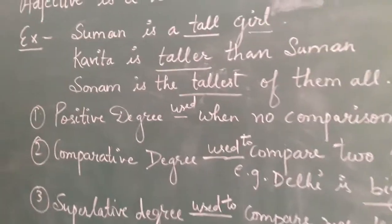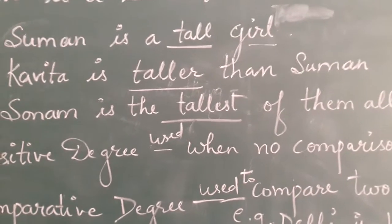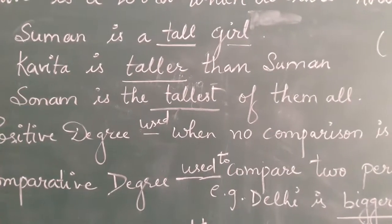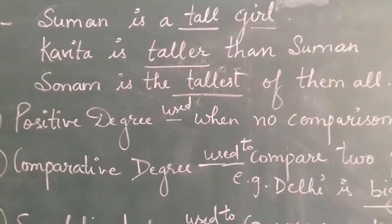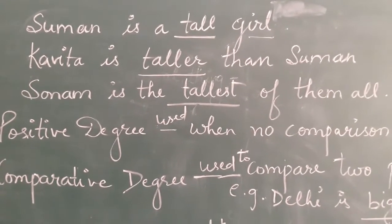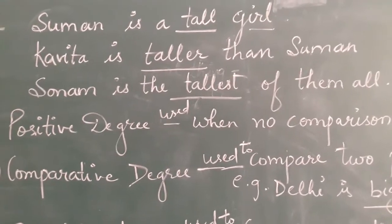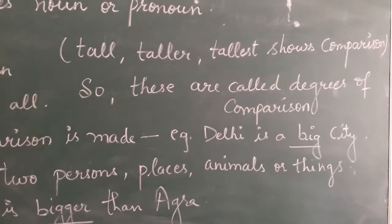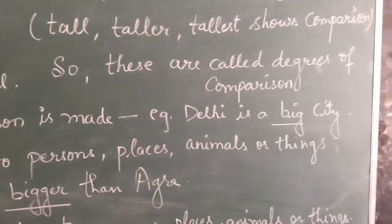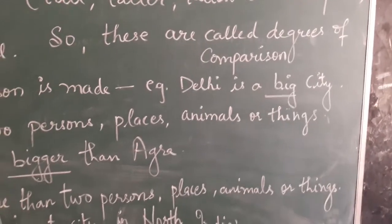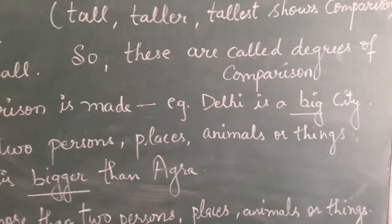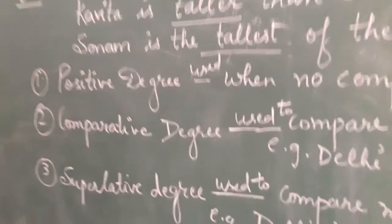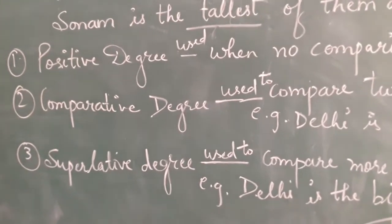In the first sentence no comparison is made — it is a positive sentence. In the second sentence, Kavita is taller than Suman, comparison is made between Kavita and Suman. In the third sentence, Sonam is the tallest of them all — comparison is made among all the girls. So tall, taller, tallest show comparison and are called degrees of comparison. There are three degrees of comparison: positive degree, comparative degree, and superlative degree.